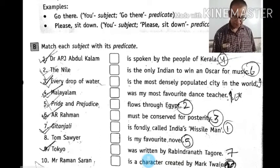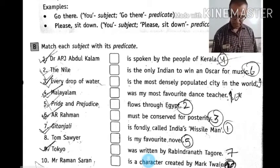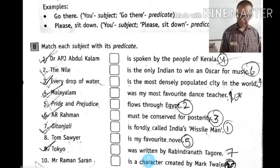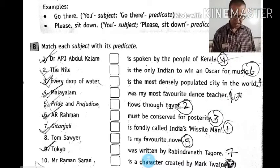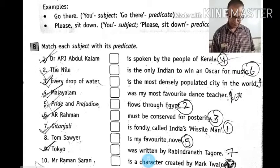Four: Malayalam is spoken by the people of Kerala. Five: Pride and Prejudice is my favorite novel. Six: A.R. Rahman is the only Indian to win an Oscar for music. Seven: Gitanjali was written by Rabindranath Tagore. Eight: Tom Sawyer is a character created by Mark Twain.